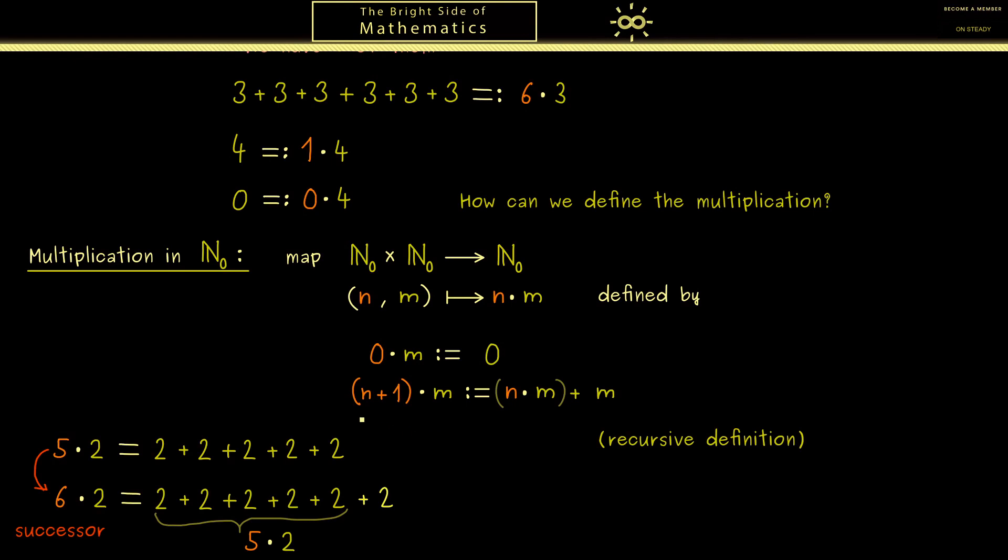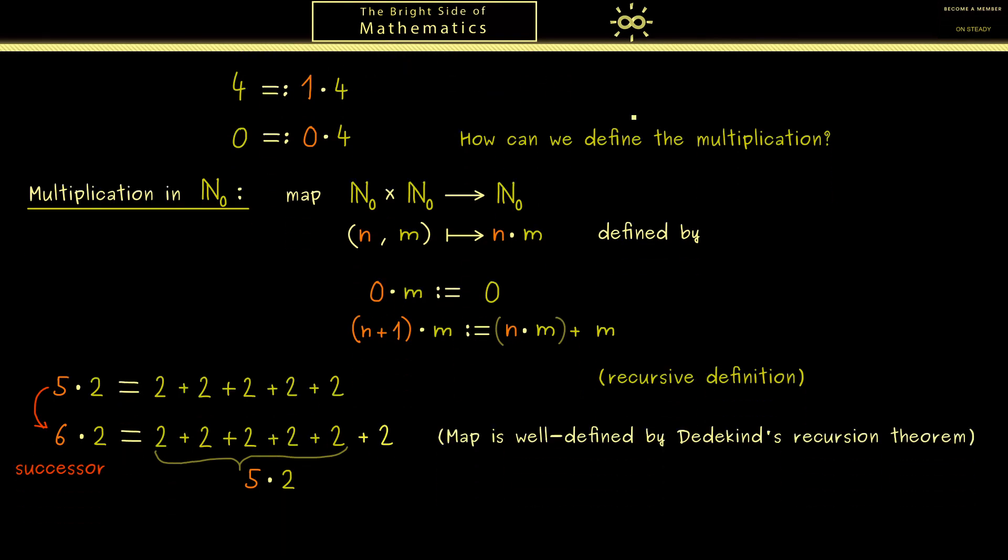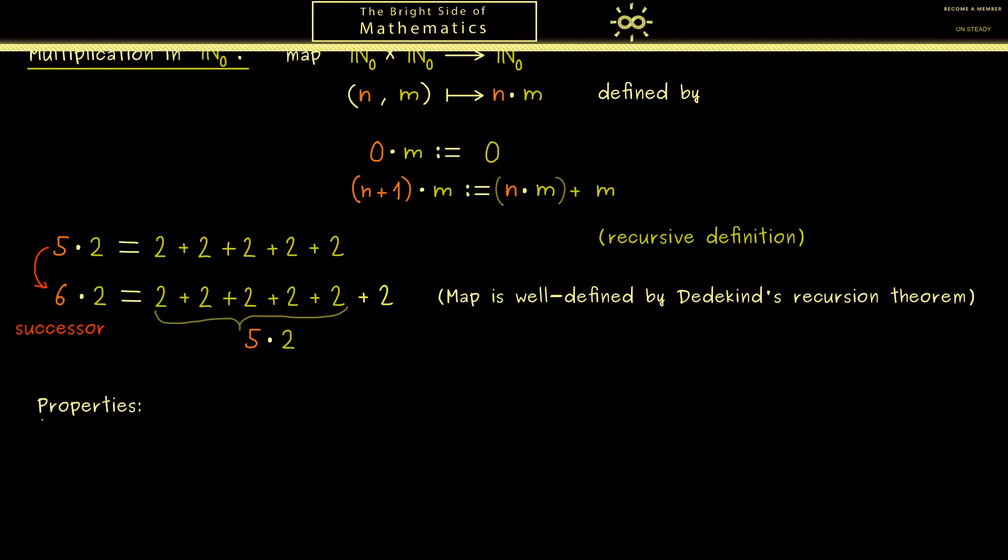Summing up, here we have a recursive definition for the multiplication. And by Dedekind's recursion theorem I showed you when we discussed the addition, the multiplication here is also well defined. Knowing this, let's discuss the properties the multiplication has to offer. Of course they are similar to the ones we have for the addition. The first one is simply that for the multiplication of 3 numbers we can set the parentheses as we want. As for the addition this is known as the associative law. And the other law we got to know there was the commutative law. It simply tells us that we are allowed to change the order in the multiplication.